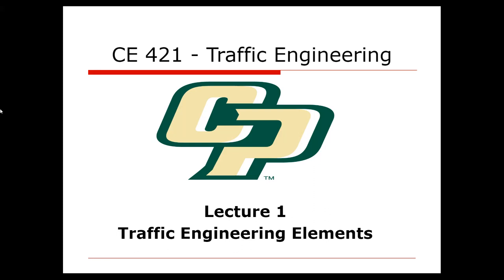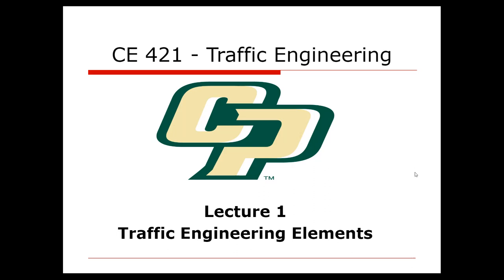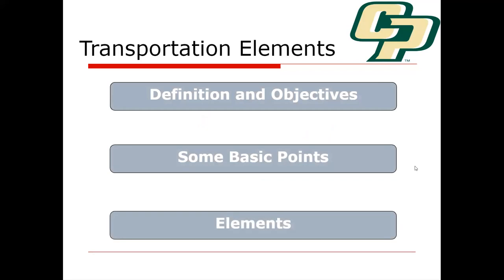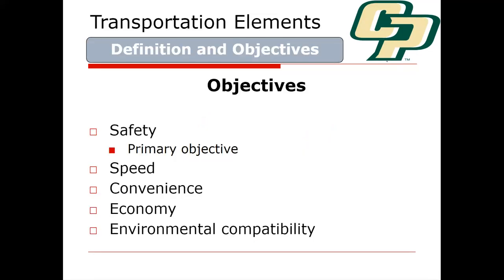You could look at environmental characteristics. Roadway characteristics are not really traffic engineering elements per se — those are things we control as traffic engineers, things we can design and address. Traffic engineering elements are usually things we don't have as much control over. So let's talk about definition and objectives, some basic points and elements. What's our mandate as a traffic engineer — what are we trying to achieve through our design of traffic systems?